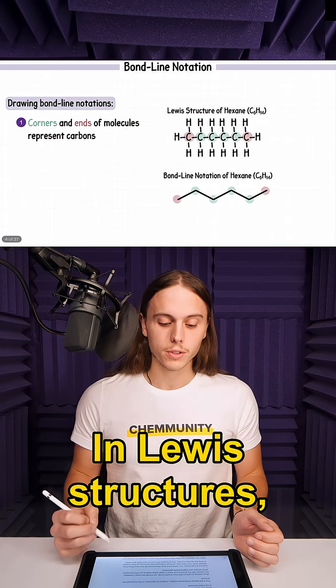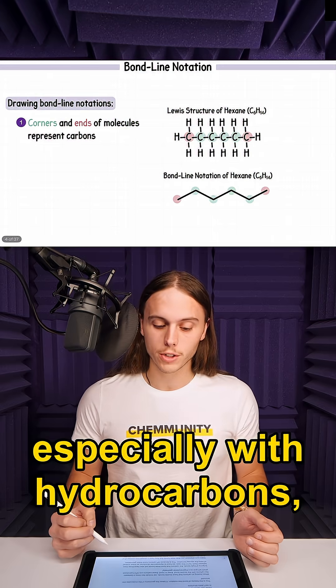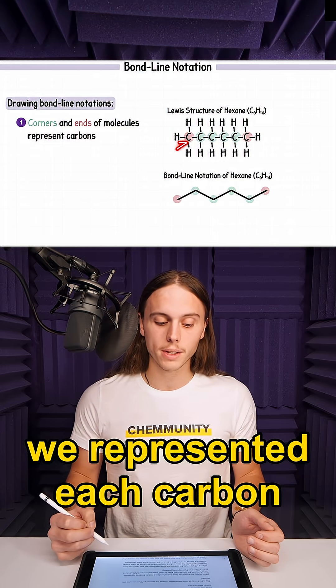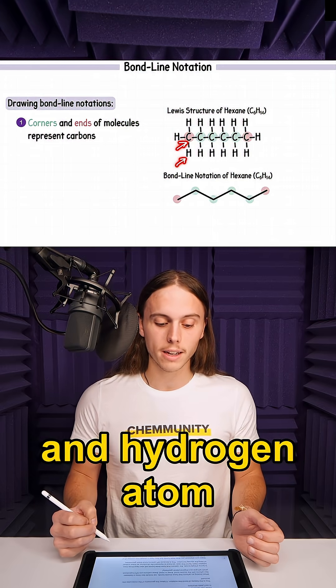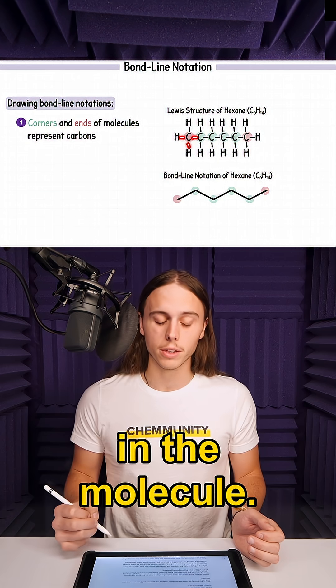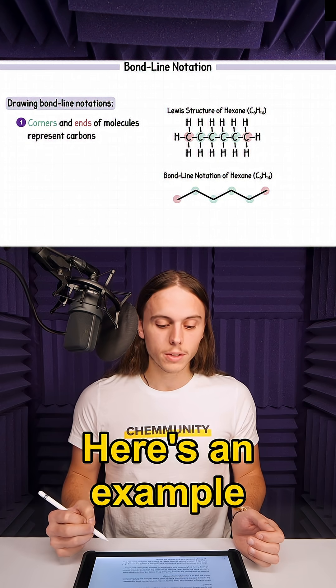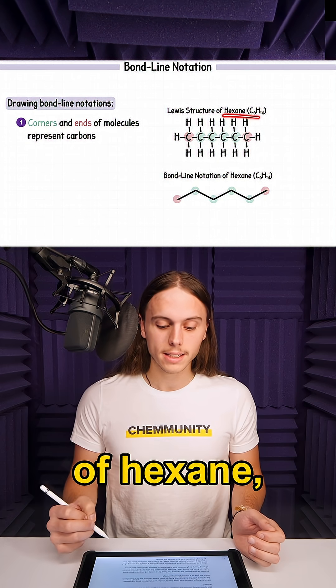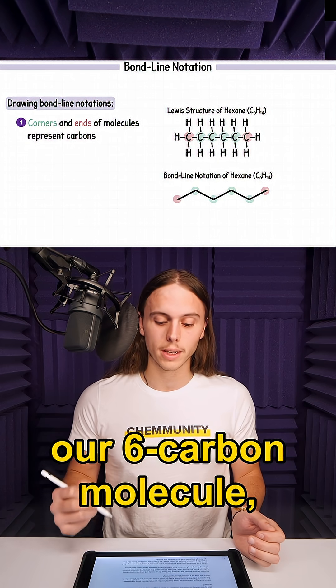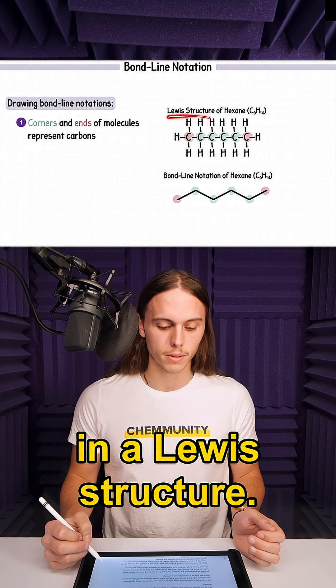In Lewis structures, especially with hydrocarbons, we represented each carbon and hydrogen atom along with all the bonds in the molecule. Here's an example of hexane, our six-carbon molecule in a Lewis structure.